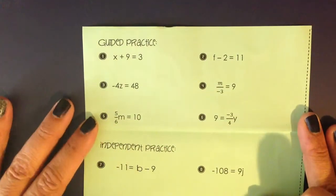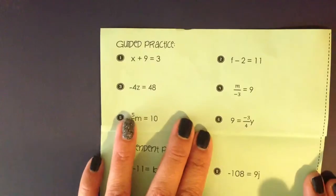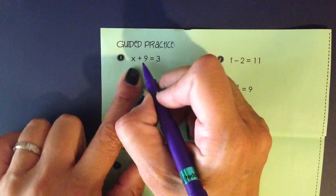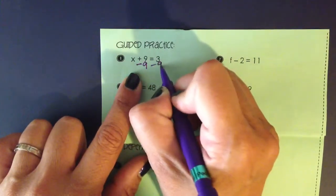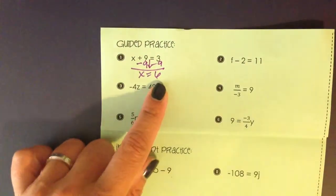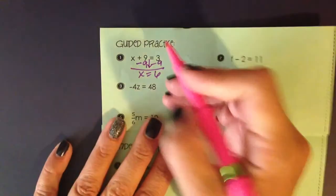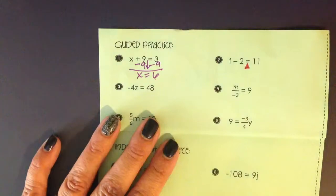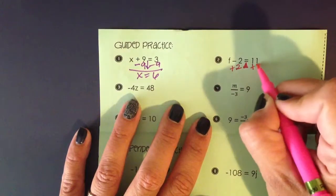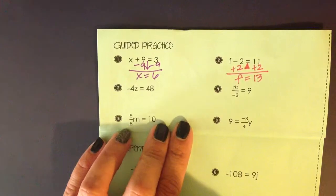I'm going to guide you through the first six problems on this one-step equations page, then ask you to stop the video and practice the last four on your own. The first equation, x plus 9 equals 3. In order to undo adding 9, we're going to subtract 9 from both sides. I'm subtracting from both sides using the equal sign as a balance point. If I undo subtracting 2 on the left, I have to undo subtracting 2 on the right and get to a solution of f equals 13.